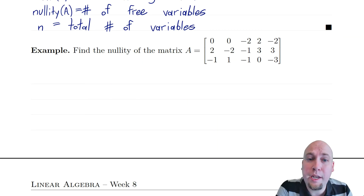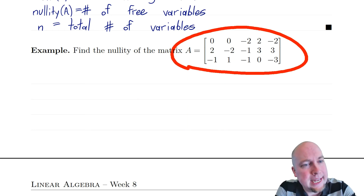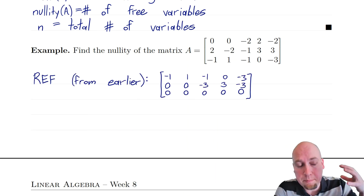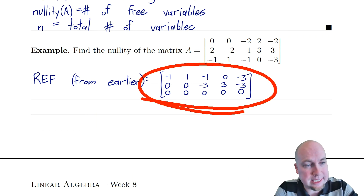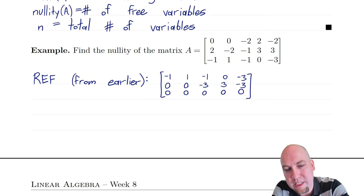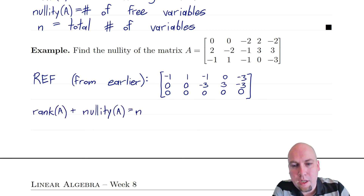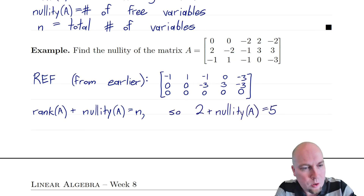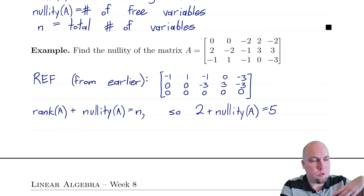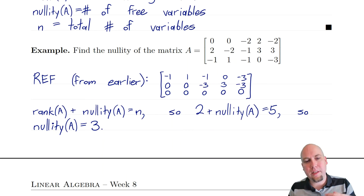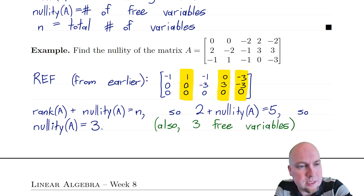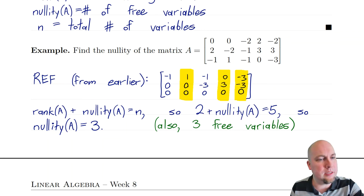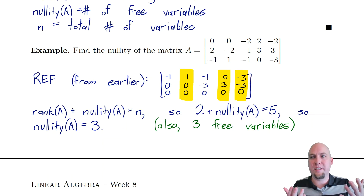Let's go through an example of actually computing the nullity of a matrix. We're going to use the matrix A from the previous video, for which we already computed the rank. Using the rank-nullity theorem, we can compute the nullity very easily. From the previous video, a row echelon form of this matrix has two non-zero rows, so the rank is two. There are five columns, so n equals five. Plugging into the rank-nullity formula: rank plus nullity equals n gives us 2 + nullity = 5, so nullity equals three. You can also see this directly by counting the three non-leading (free variable) columns in the row echelon form.